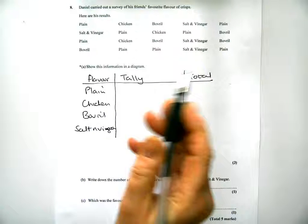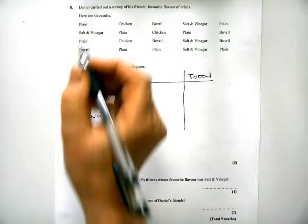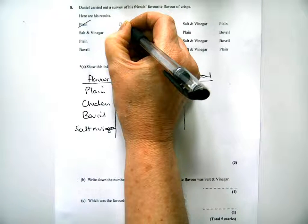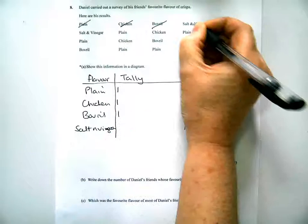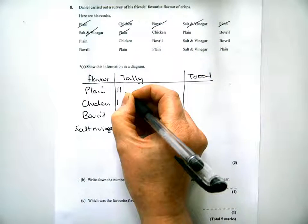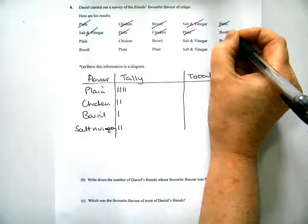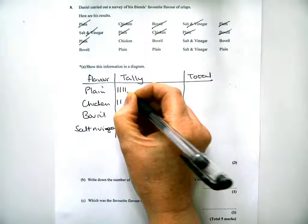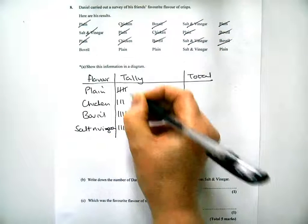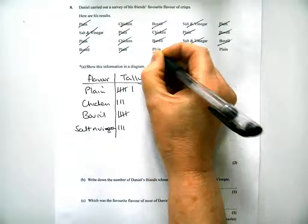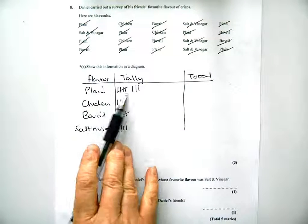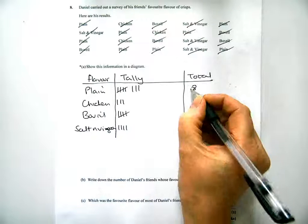So what I'm going to do, I'm going to cross it off and put it in a tally chart. Chicken — one there, bovril — one there, vinegar — one there, and so on. Now I'm going to add these up: that's 8, 3, 5, 4.